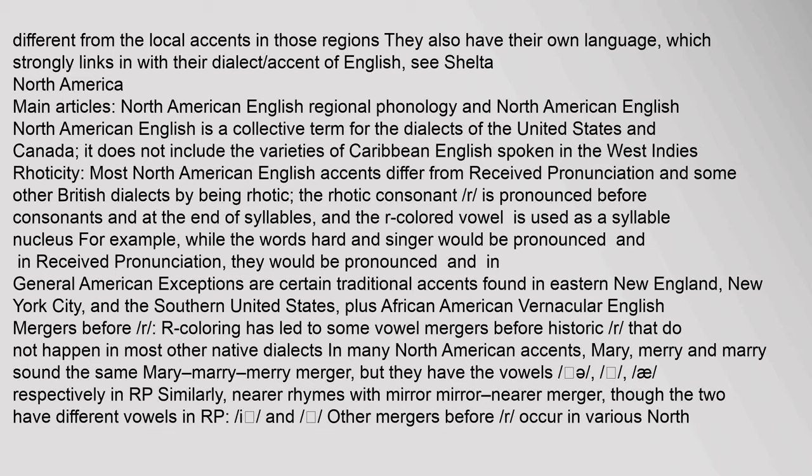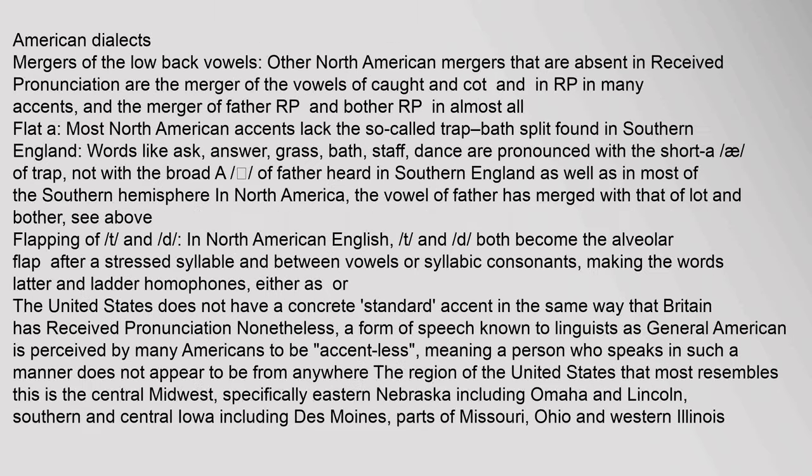R-colouring has led to some vowel mergers before historic r that do not happen in most other native dialects. In many North American accents, 'Mary,' 'marry,' and 'merry' sound the same (the Mary-marry-merry merger), but they have different vowels in RP. Similarly, 'nearer' rhymes with 'mirror' (the mirror-nearer merger), though the two have different vowels in RP. Other North American mergers include the merger of the vowels of 'cot' and 'caught,' and the merger of 'father' and 'bother.' Most North American accents also lack the trap-bath split found in southern England.